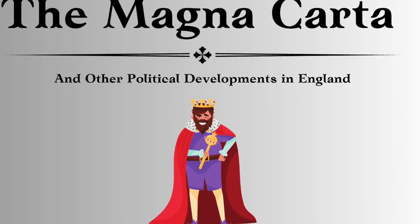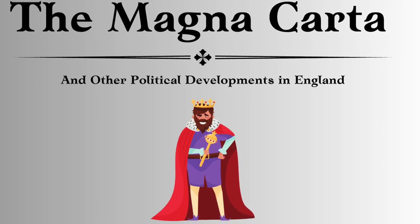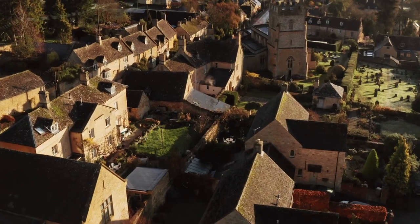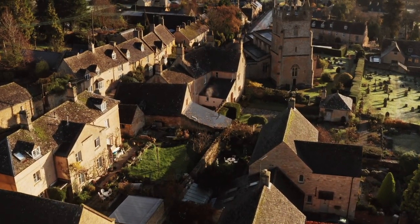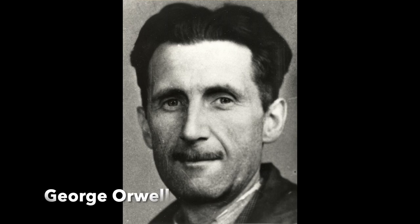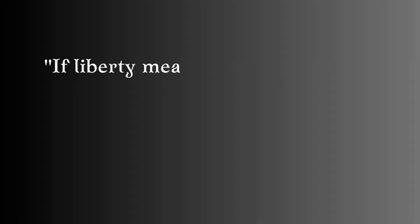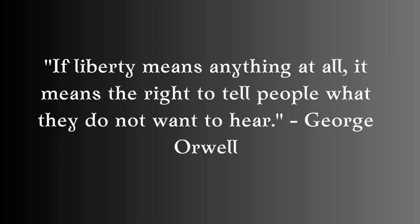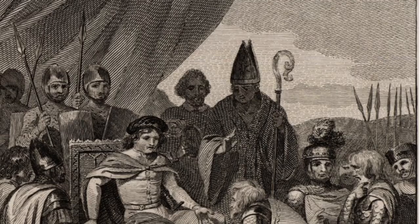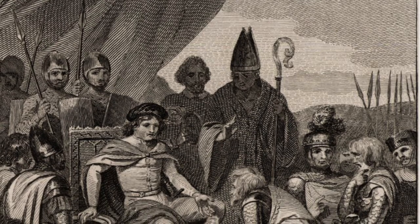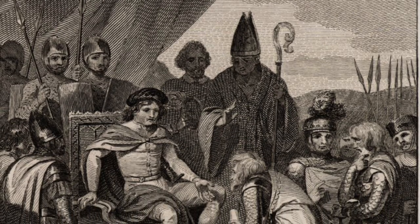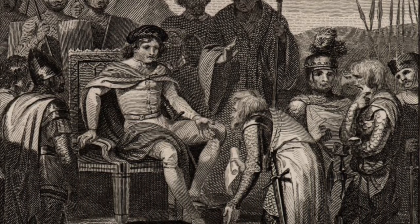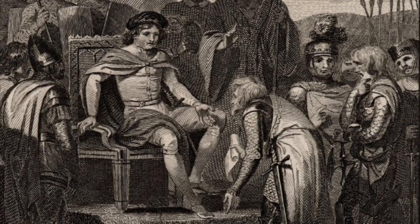Hello, this video is about political developments in England from the medieval period into the modern era. The writer George Orwell said, if liberty means anything at all, it means the right to tell people what they do not want to hear. And during the Middle Ages, King John of England was told by his barons something he did not want to hear. What that was, you will find out in the following video.